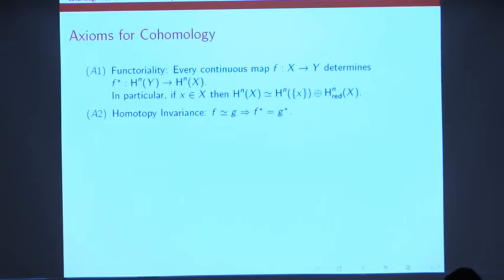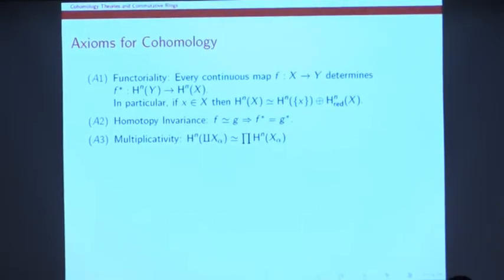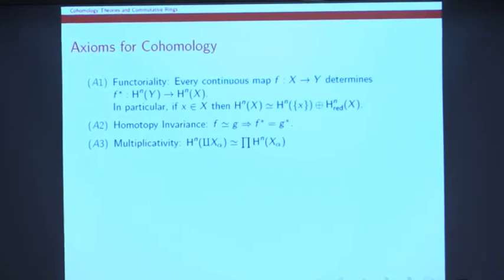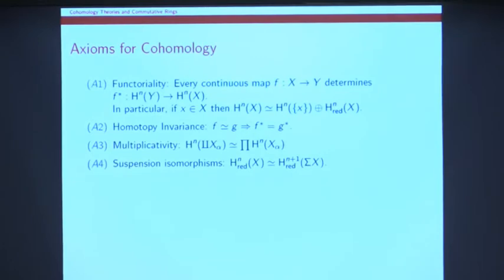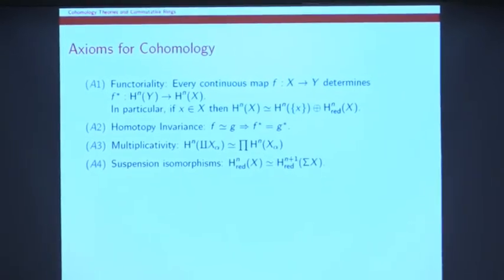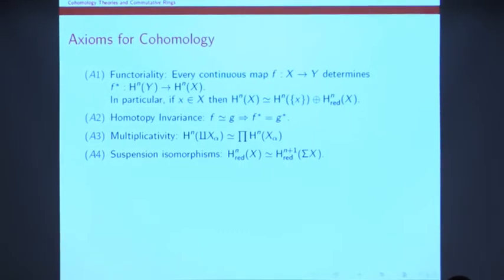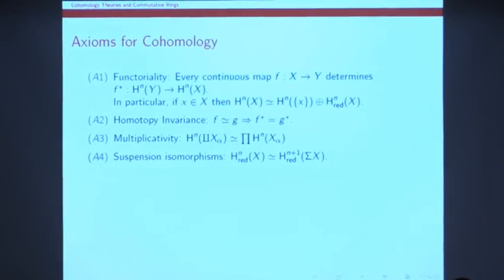Cohomology is homotopy invariant. Homotopic maps between topological spaces induce the same map on cohomology. It's multiplicative. It carries disjoint unions of spaces to products at the level of cohomology. These cohomology groups in different degrees are related to one another by suspension isomorphisms. The reduced cohomology of X in degree N is the same as the reduced cohomology of the suspension of X in degree N plus 1.